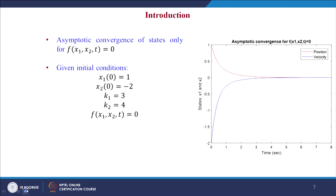Consider the example of single dimensional motion of the mass with states position and velocity, with initial conditions x₁(0) = 1 and x₂(0) = -2, controller gains k₁ = 3, k₂ = 4, and with disturbance equal to 0. It will converge the system to the equilibrium point as time tends to infinity — asymptotic convergence is obtained for zero disturbance by this state feedback controller.